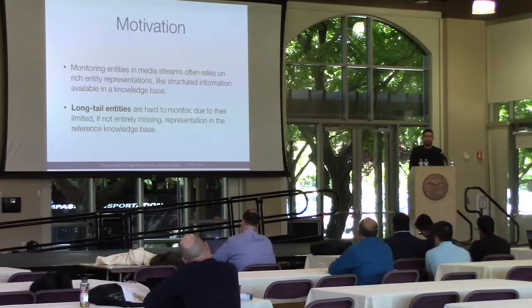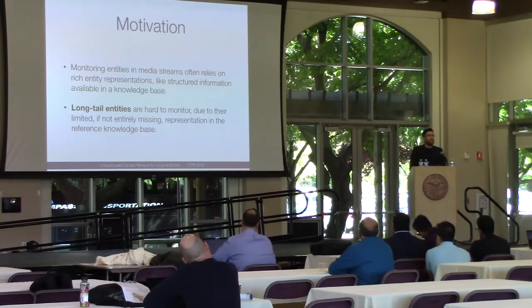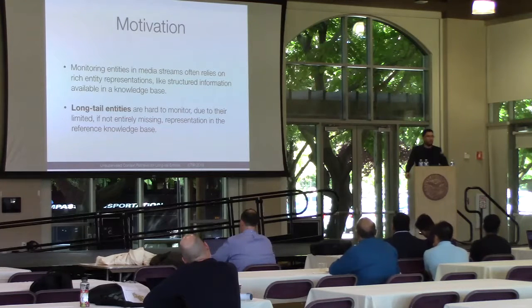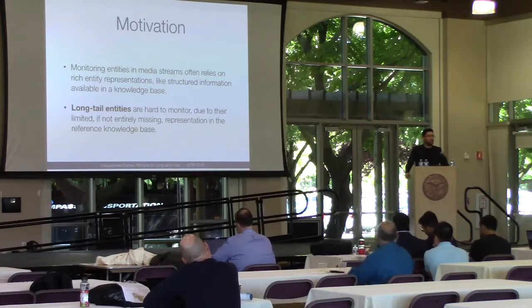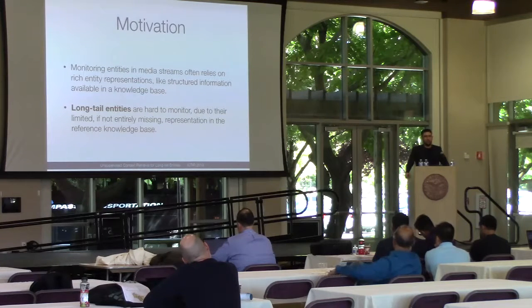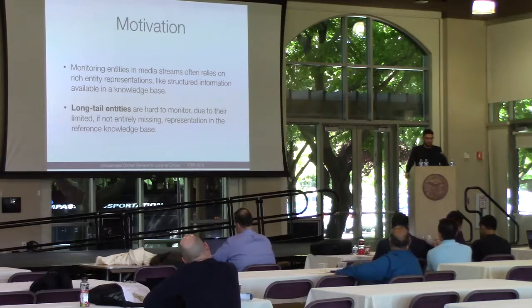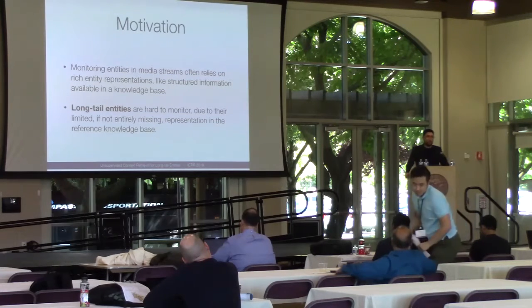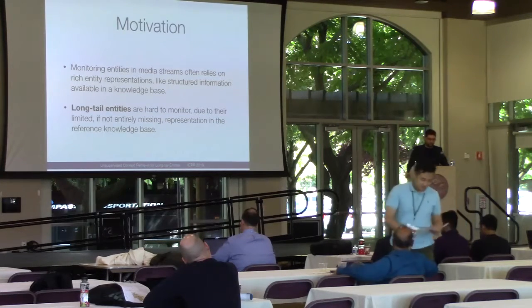One difficulty is with long-tail entities that don't really have any information about them — they don't have a Wikipedia entry. All you have is a name, maybe a few surface forms of the entity, different names by which it is mentioned, and maybe a short textual description.